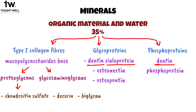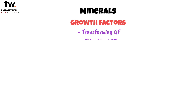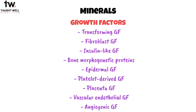DSP and DPP are only found in dentin, not in bone. Dentin also has a bunch of growth factors that are super important for its mineralization. These include transforming growth factor, fibroblast growth factor, insulin-like growth factors, bone morphogenetic proteins, epidermal growth factor, platelet-derived growth factor, placenta growth factor, vascular endothelial growth factor, and angiogenic growth factor. These parts play a big role in how dentin grows and stays healthy.